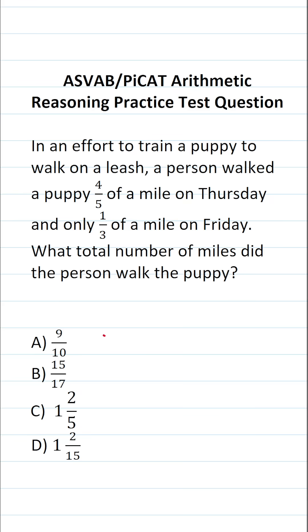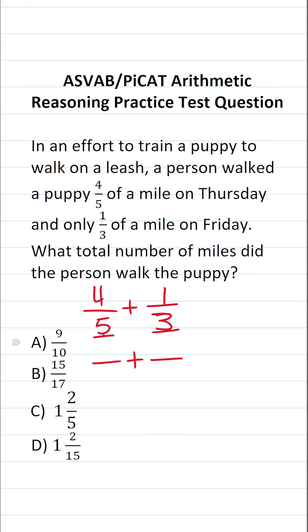For this one, we're simply adding four-fifths plus one-third — that is to say, we're going to be adding these two fractions. In order to add fractions, they have to have the same or a common denominator. In this case, we have a denominator of five and a denominator of three.